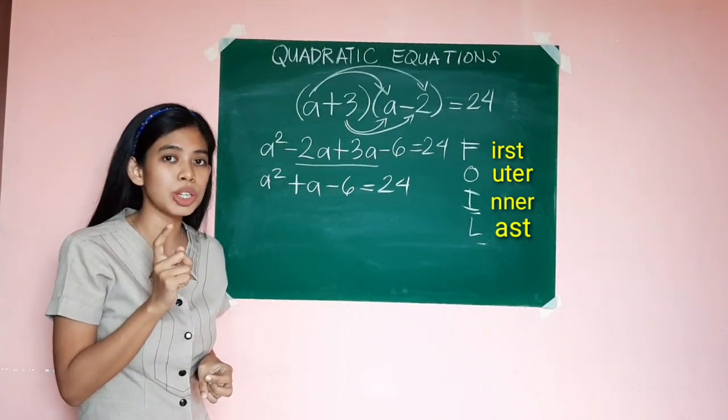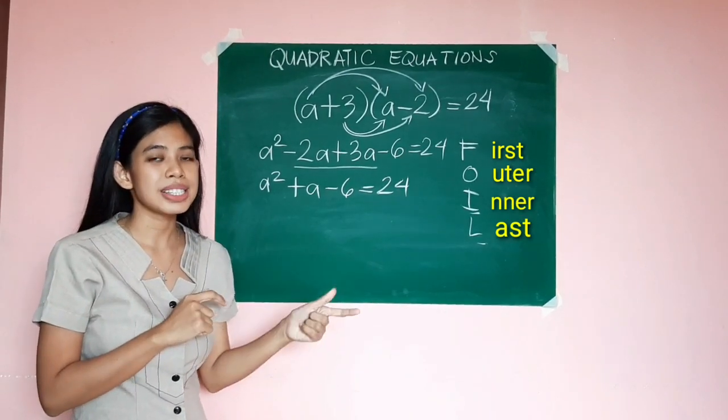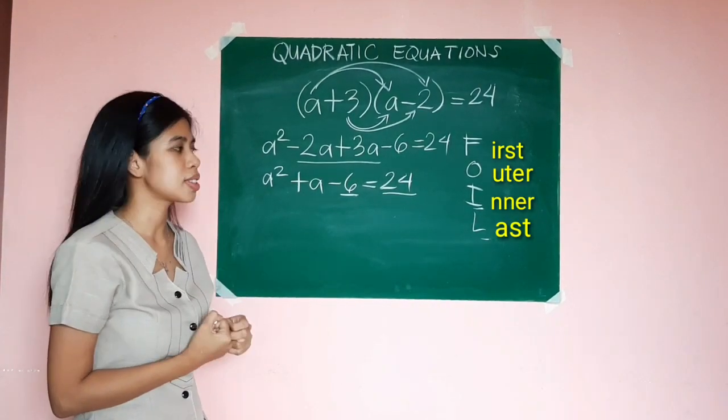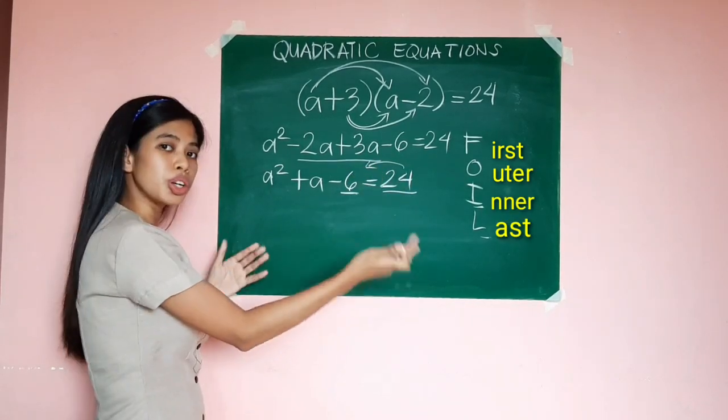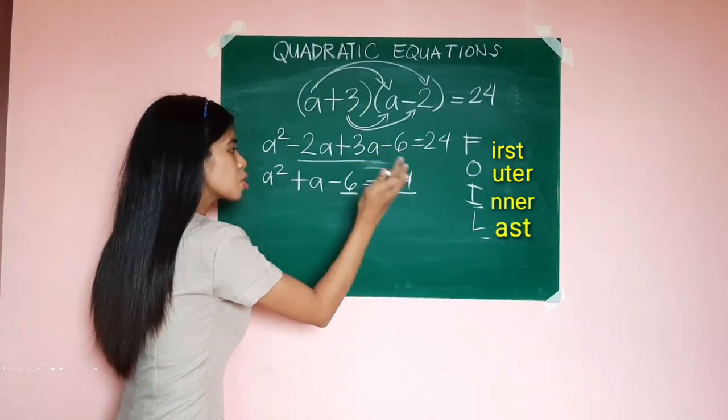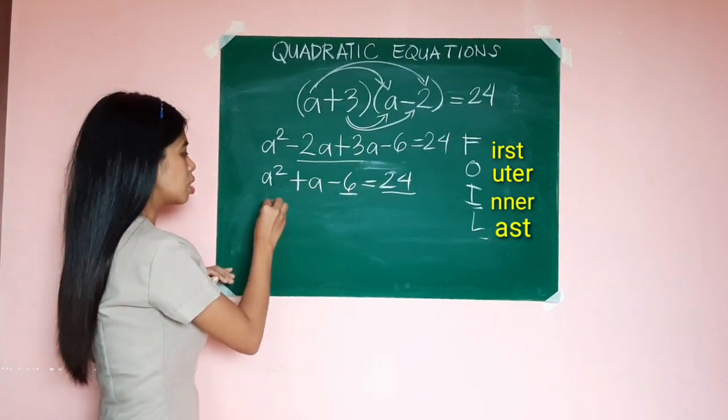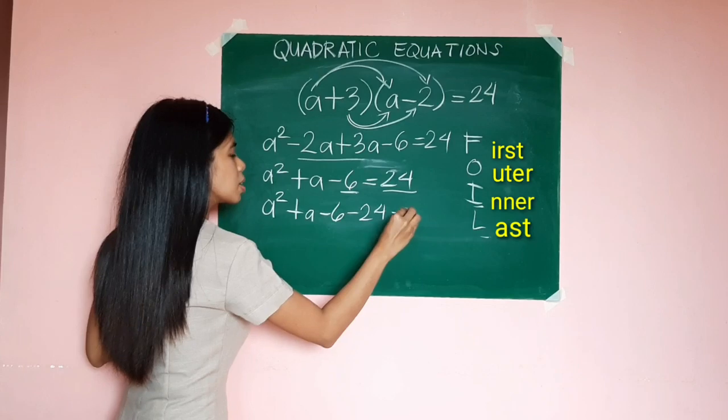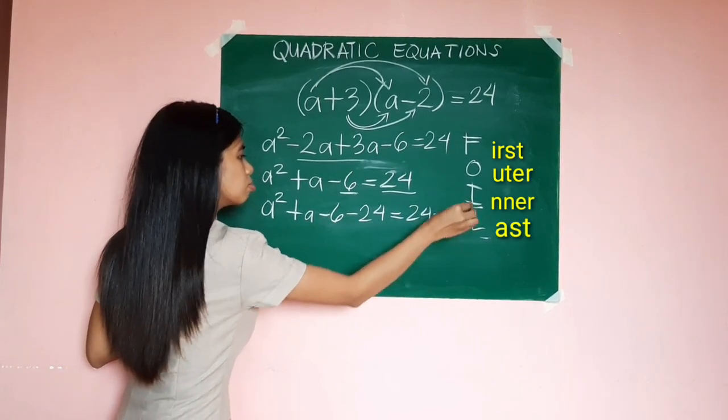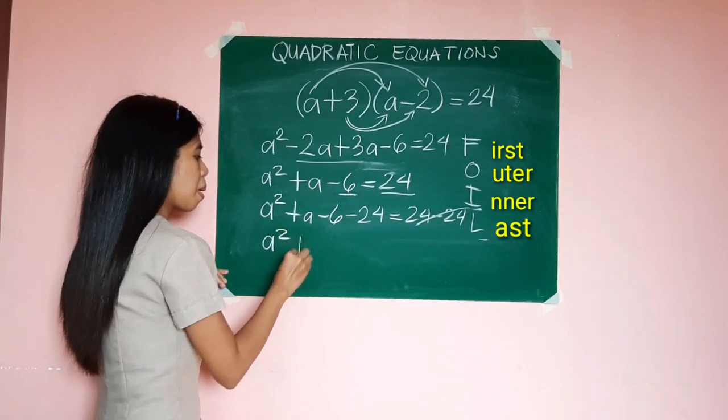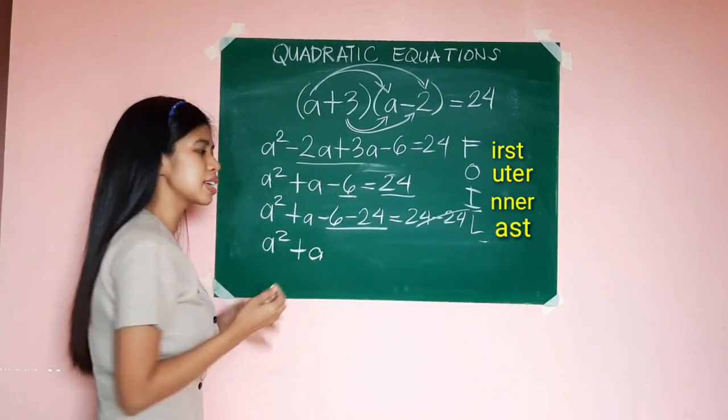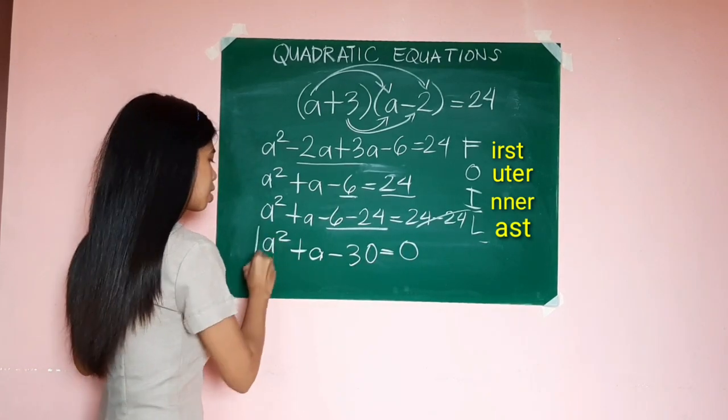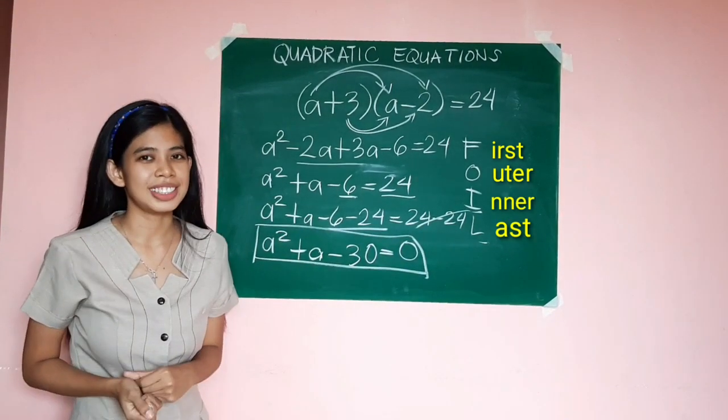The standard form of quadratic equation is a² + bx + c = 0. So we have to combine the two constant terms. We may just transpose 24 to the left side or subtract 24 from both sides of the equation. So that's a² + a - 6 - 24 = 24 - 24, which equals 0. So we have a² + a, and negative 6 minus 24 would give us negative 30 equals 0. This is now a quadratic equation written in standard form.